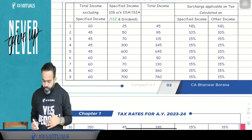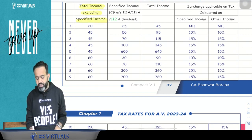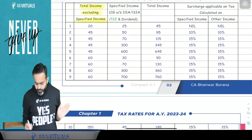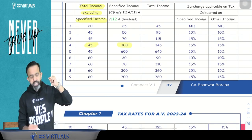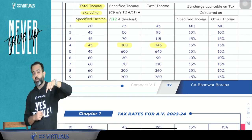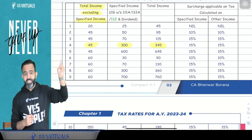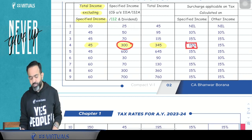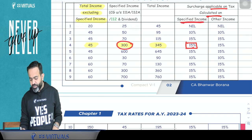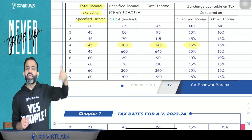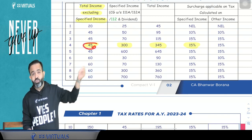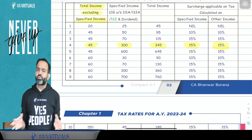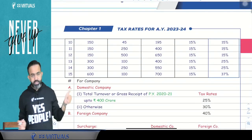In example number 4: total income other than specified income (LTCG 112A, LTCG 112, STCG 111A, dividend) is ₹45 lakh, and specified income is ₹3 crore, so total income is ₹3.45 crore. Income is more than ₹2 crore up to ₹5 crore, so surcharge should be 25%. But on the specified income, maximum surcharge can be 15%. And since the balance other income (₹45 lakh) is not itself more than ₹2 crore, surcharge on other income tax is also 15%.